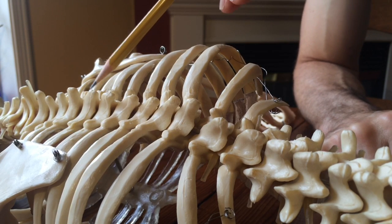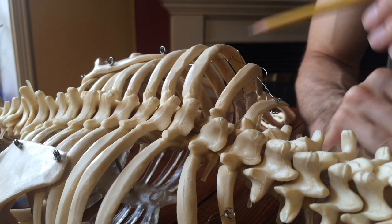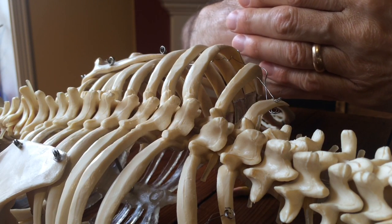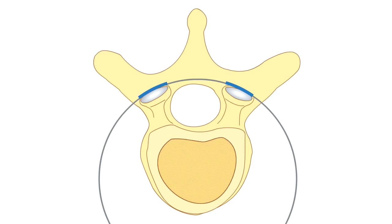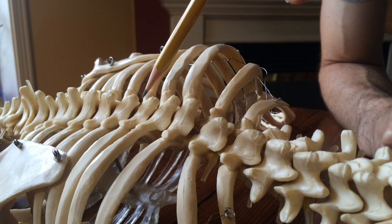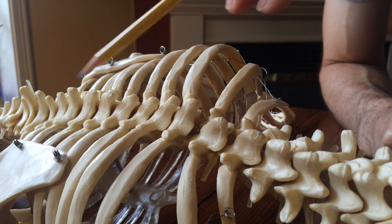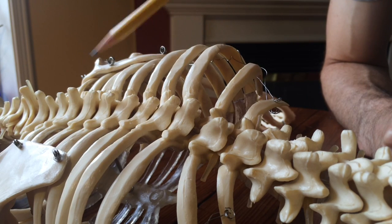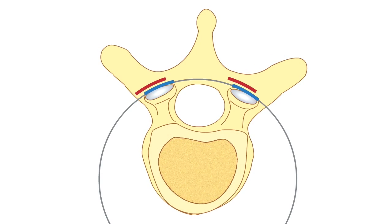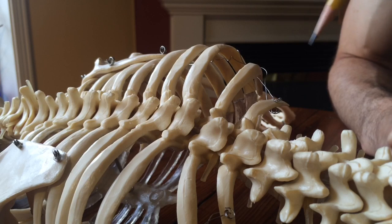In the thoracic spine they sit more or less cupped one over top of each other. The superior vertebral articular surface is over top of the inferior articular surface, and it allows for a range of about 30 to 35 degrees across the whole thoracic spine — so we're talking about 2 to 2.7 degrees for each vertebral segment.